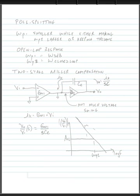So last time we looked at a type of compensation called shunt compensation, and this is a form of narrow banding compensation. We saw that we end up with quite a large capacitor if we do this.